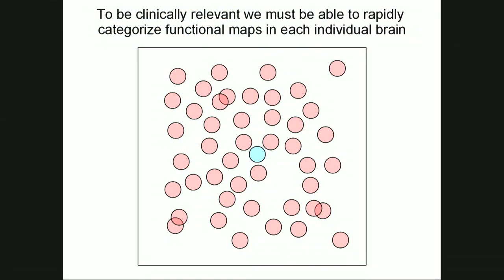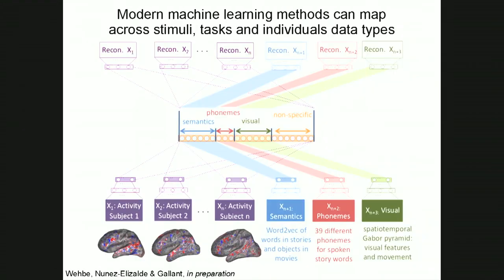Most neuroimaging experiments simply map the mean of the Gaussian distribution of individuals, shown by the blue spot here. We want to map each individual subject — all the red points in this distribution. We can do this with machine learning; we couldn't do this until recently because we just didn't have the computer power. If you throw machine learning at this problem, you can solve it quite nicely.